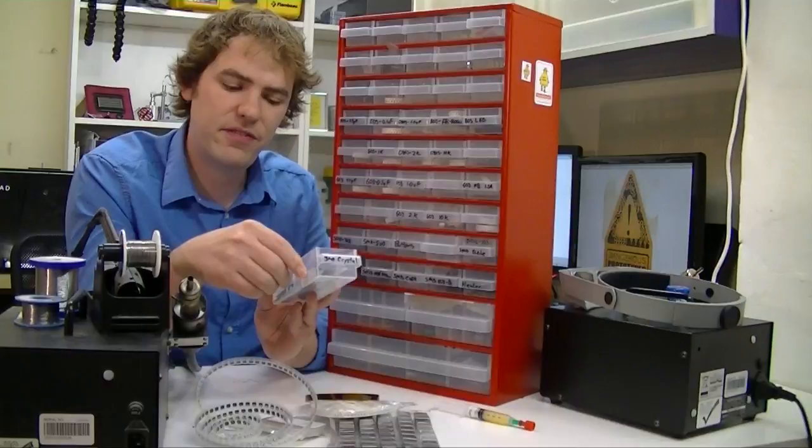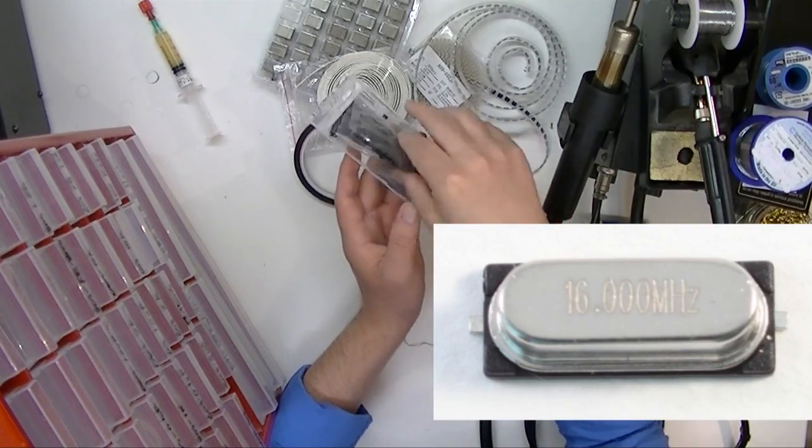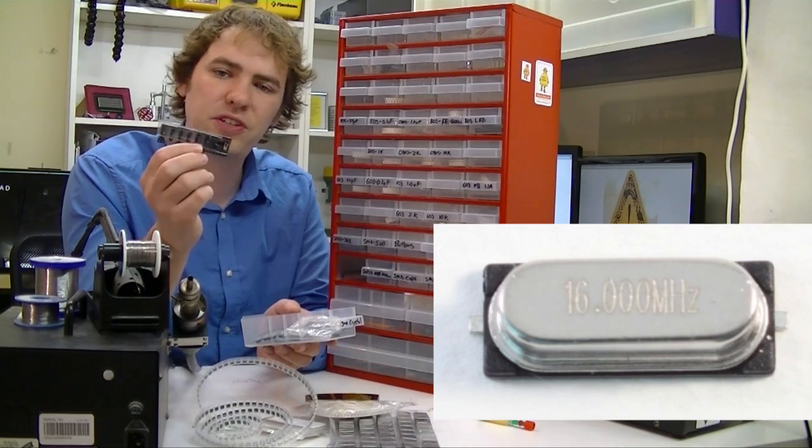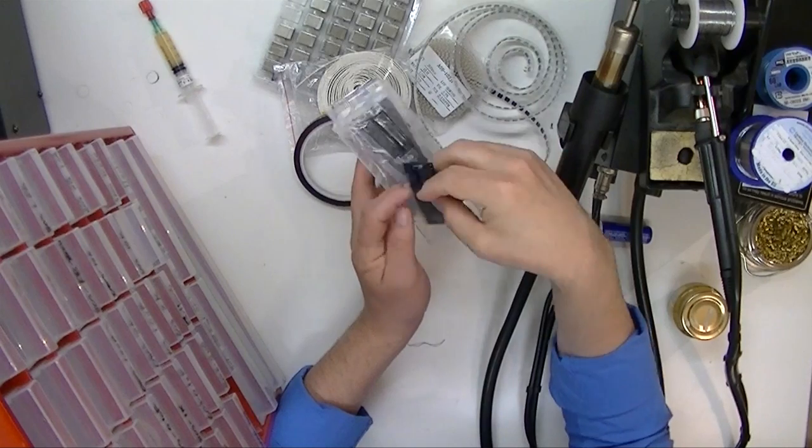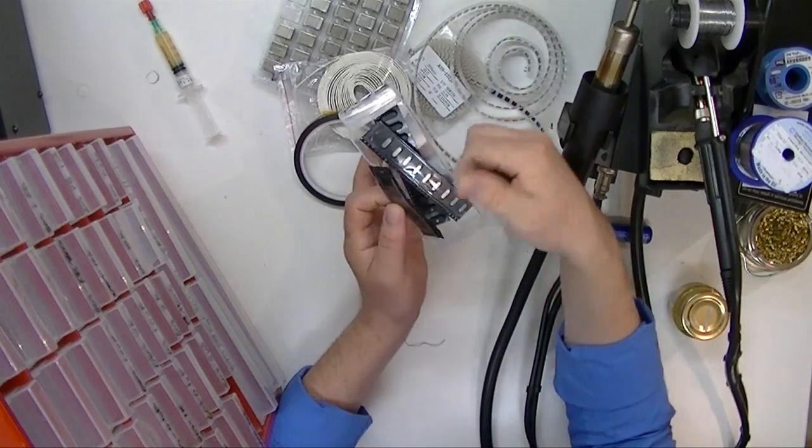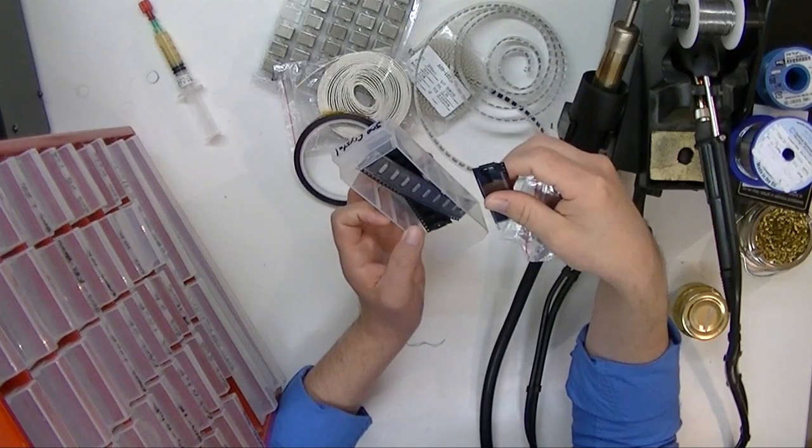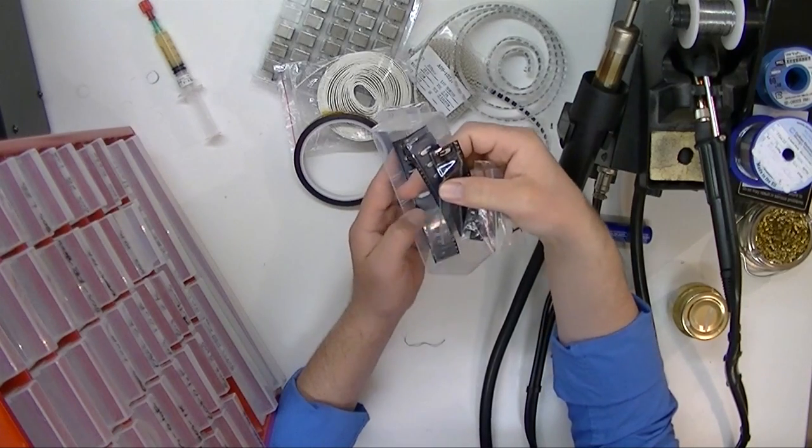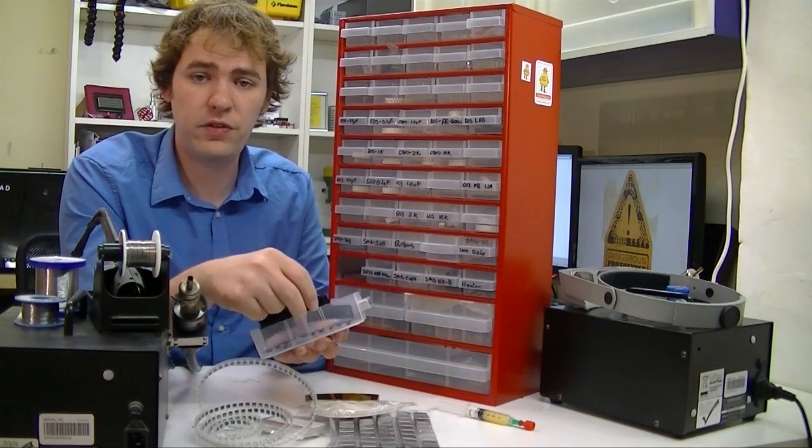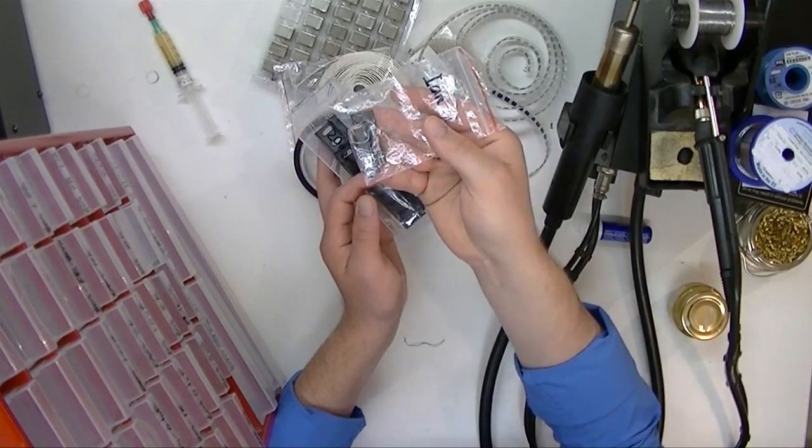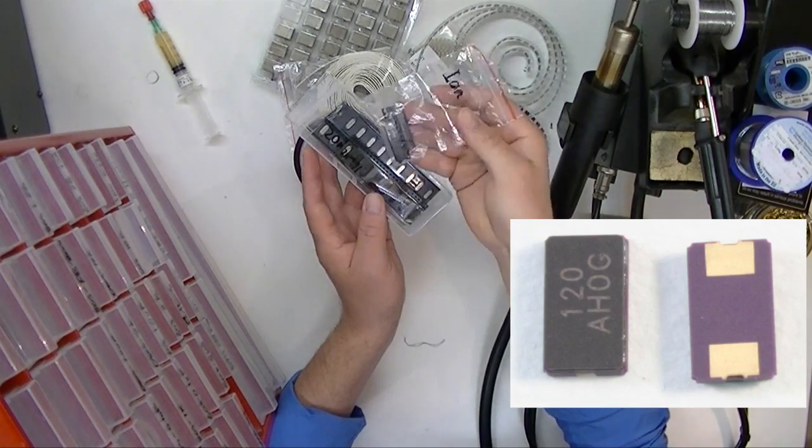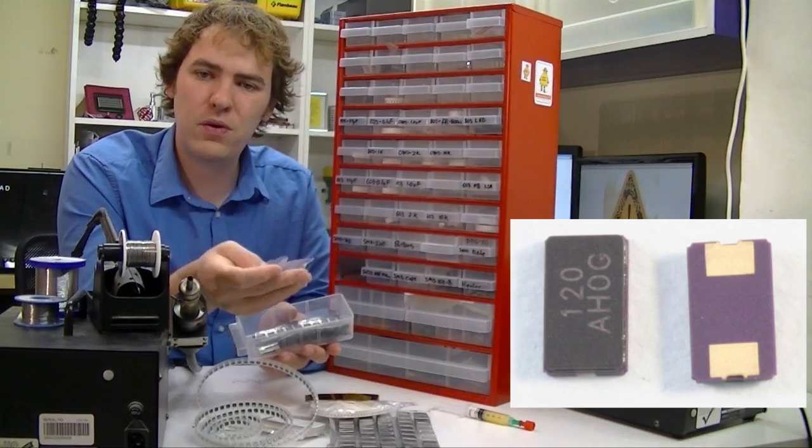For crystals and stuff, there's just one big drawer of that. We use these HC49U. They look like the through-hole version except they have surface mount tabs instead. We keep 16 megahertz, which is good for a lot of USB projects with PICs. 12 megahertz, which is also used for USB. I've got 20 megahertz in here, which we use for the USB IR toy. And then a small bag of 4x6 millimeter surface mount crystals in 12 and 8 megahertz, which is what's used on the Bus Pirate version 4.